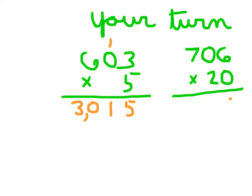706 times 20, hopefully you remembered to place that 0, because that 2 is worth 20. Then you go to 2 times 6, which is 12. A 2, regroup a 1, right to that 10's place.